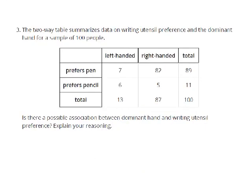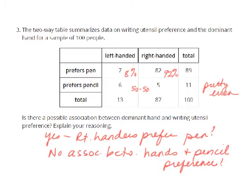Try to answer this question now and pause the video. Here are your answers. I did 7 out of 89 to get 8%, and then 82 out of 89. You can see overwhelmingly right-handed people prefer pen. But if you look at the 6 versus the 5, there's really no association for pencil preference between left-handed and right-handed. The biggest association is that right-handed people overwhelmingly prefer pen.